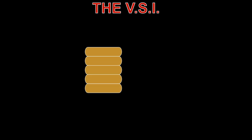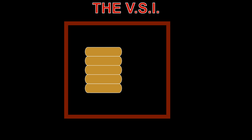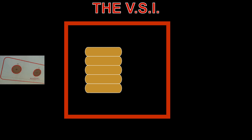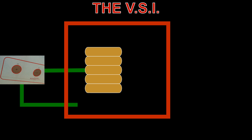In a simple VSI, a barometric capsule is contained in a sealed case. The capsule is fed with static pressure from the static system. The case is also connected to that system through a calibrated nozzle. The nozzle restricts the passage of air, so that there is a time delay between a change in static pressure and the pressure being experienced within the case.